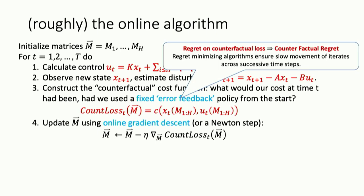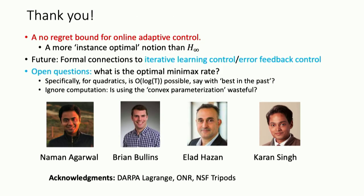Once we have this counterfactual loss at time T, we literally just take a gradient step on the controller — there could be other methods like a Newton step. We construct this counterfactual loss, and it turns out it's actually convex. Using some machinery from online convex optimization with memory, you can show this achieves low regret. This is closely related to methods people use in practice based on error feedback control and iterative learning control — they try to adjust what they do based on the disturbances they just saw, like shooting an arrow that's off target and adjusting leftward next time.